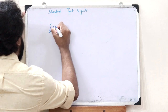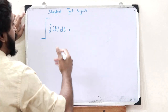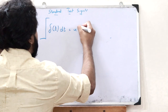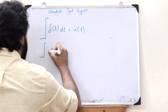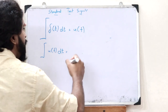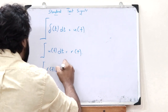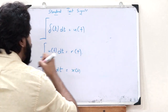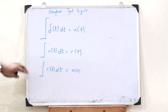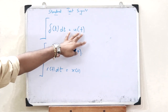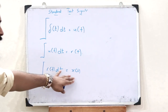If we have a particular impulse signal and integrate it with respect to time, we get a step signal. Now, integrating the step signal — the integral of u(t) dt — we get a ramp signal. And upon integrating the ramp signal with respect to time, we get a parabolic signal. So, upon integrating an impulse signal we get a step signal, integrating a step signal gives a ramp signal, and integrating a ramp signal gives a parabolic signal.